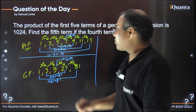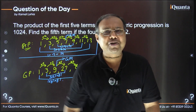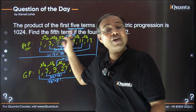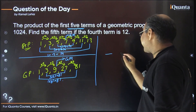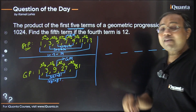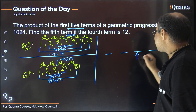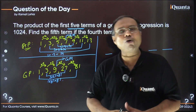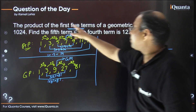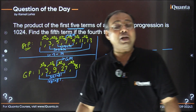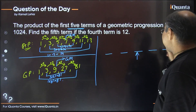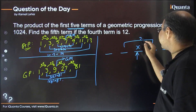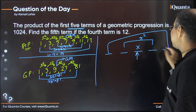Now let's come to the question. The product of the first five terms of a GP is 1024. Five is an odd number, so we have first, second, third, fourth, fifth terms. The central — third — term is the geometric mean of all five. The product of all five terms equals x^5, where x is that central term. So x^5 = 1024.